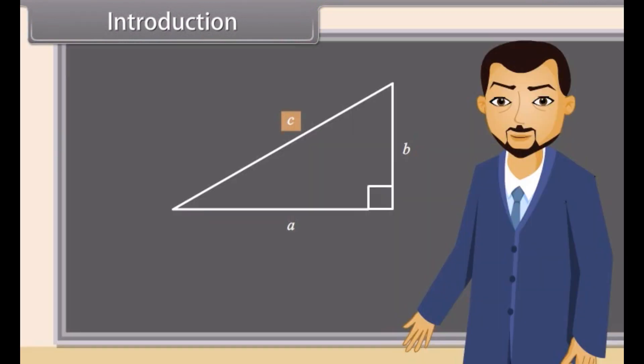Yes, C is the hypotenuse. So by the Pythagorean theorem, C squared is equal to A squared plus B squared. We will prove some trigonometric identities.